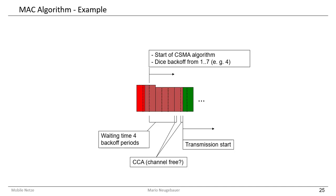Here is a small example. First we have the beacon package — the red one — then a random waiting time of four backoff periods. We then perform the CCA — the channel clear assessment — and in this case there is no other participant sending any message. After the last channel clear assessment confirms the channel is clear, we start our transmission, shown in green, and send our message to the coordinator. The random element here is illustrated by the dice of four, giving us four backoff periods to wait before the first channel clear assessment.